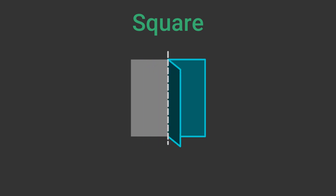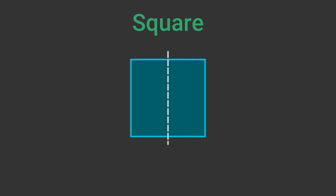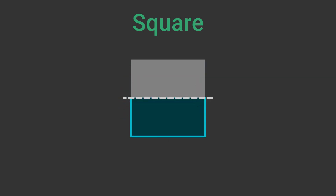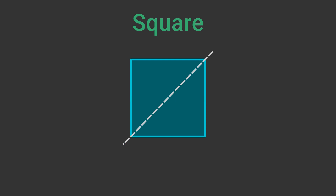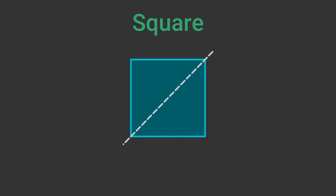A square has a vertical line of symmetry between the centres of the top and bottom sides. It has a horizontal line of symmetry between the centres of the left and right sides. It also has a line of symmetry along each diagonal. That is a total of four lines of symmetry.